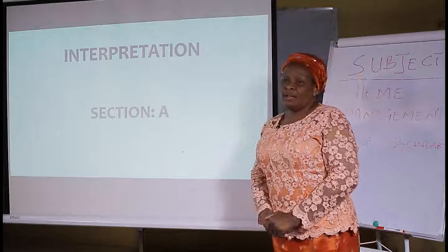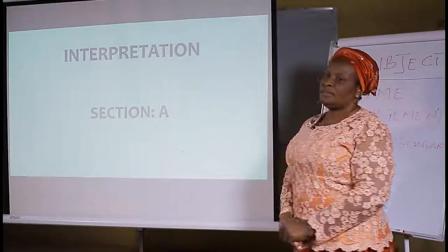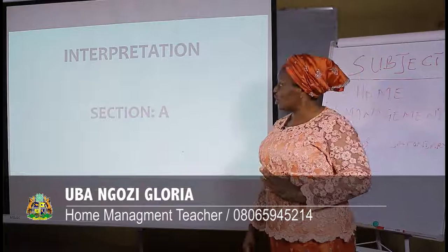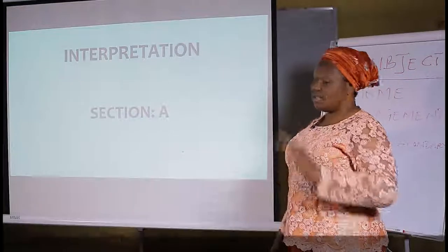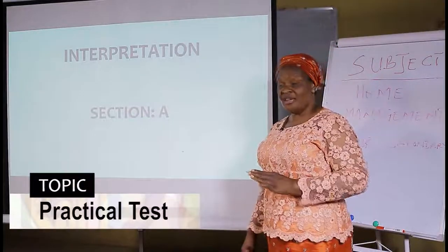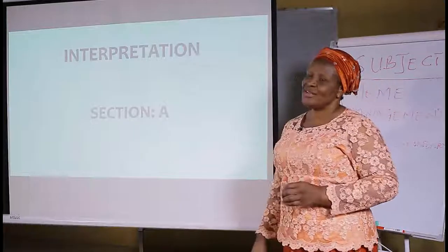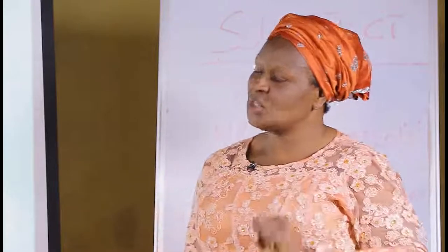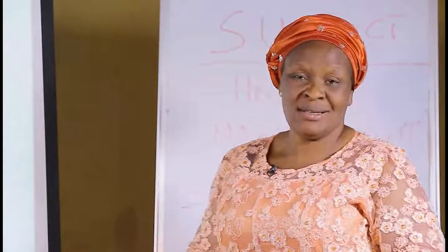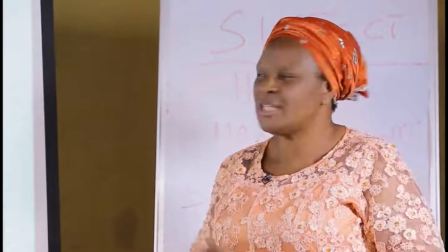In a practical interpretation class, the practical test interpretation has three sections: Section A, Section B, and Section C. We have to understand the practical test before it is interpreted. If you don't understand the practical test, you might interpret wrongly. Now let's go back to the question again to see what we are asked to do.